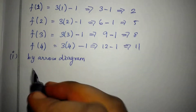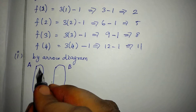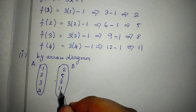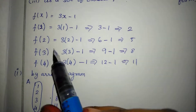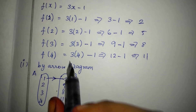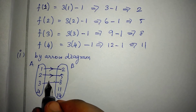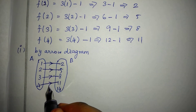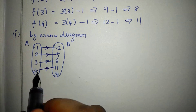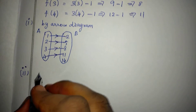First subdivision: arrow diagram. We have set A = {1, 2, 3, 4} and set B = {2, 5, 8, 11, 14}. We draw arrows: 1 maps to 2, 2 maps to 5, 3 maps to 8, 4 maps to 11. Note that 14 in B has no element mapping to it. This completes the arrow diagram.